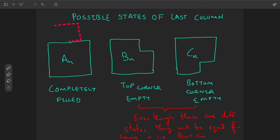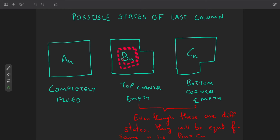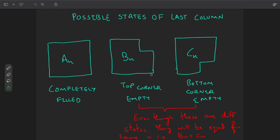The possible states of the last column are: the board is completely filled, we have a top empty corner, or we have a bottom empty corner. We define A(n) as the number of ways to completely fill the board, B(n) as the number of ways with the top corner empty, and C(n) as the number of ways with the bottom corner empty. B(n) and C(n) have equal answers for the same value of n.